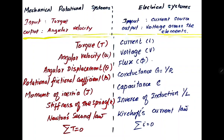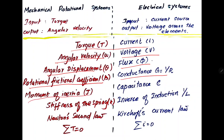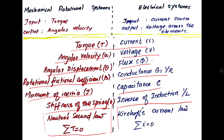The terms related to the torque-current analogy: torque is equivalent to current, angular velocity is equivalent to voltage, angular displacement is equivalent to flux, rotational friction coefficient is conductance, moment of inertia is capacitance, and stiffness of the spring is the inverse of inductance. Newton's second law — sum of applied torque equals zero — maps to KCL: sum of current at a node equals zero.